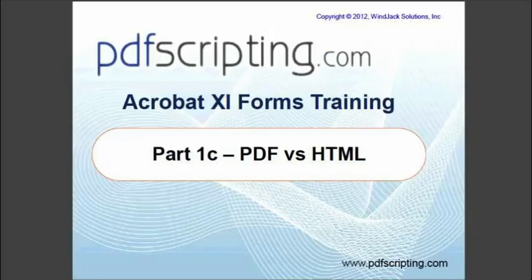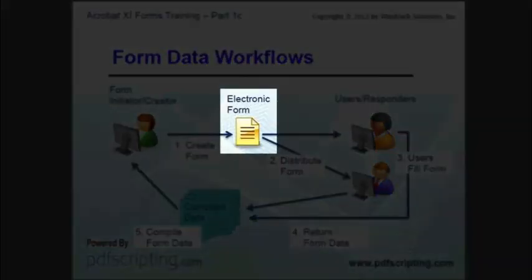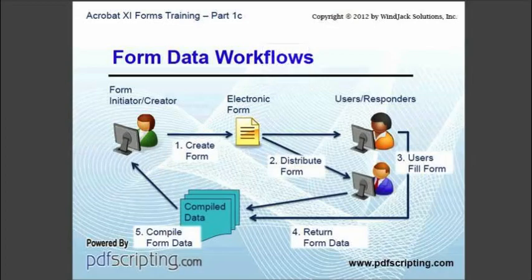In the last video, titled The Backstory, you got a high-level view of what electronic documents and, more importantly, electronic forms are all about. You also learned that PDF and HTML are the most universally accepted document formats for creating electronic forms. In this video, we'll take a closer look at these formats to understand better how they can be used in a data workflow process. A form is a special kind of document for collecting data from a user, but in order for a form to be useful, it needs to be part of a data workflow process for actually collecting that data.